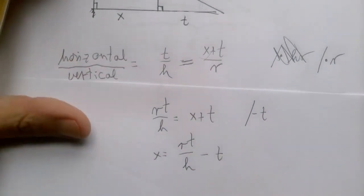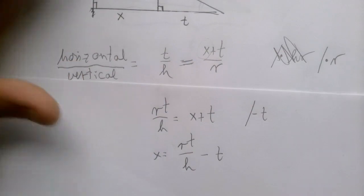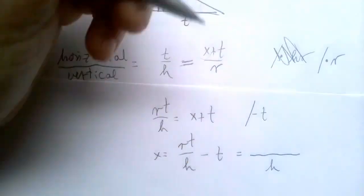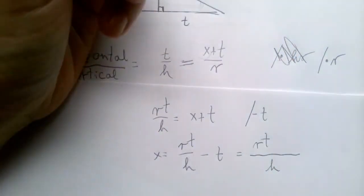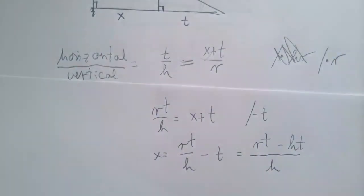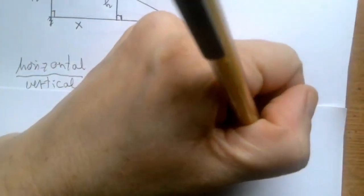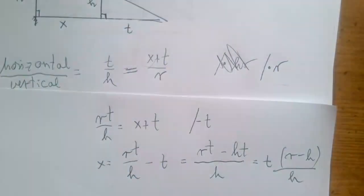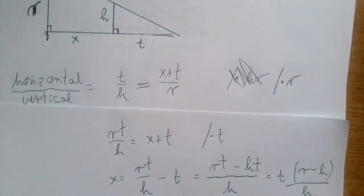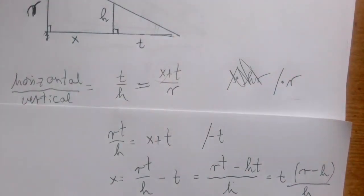And if this is not in the form that we like, we can bring stuff to the common denominator, and then it is R T minus H T over H. Or, and I think after this we are done, T times R minus H over H. Either of these three forms are perfectly fine final answers.